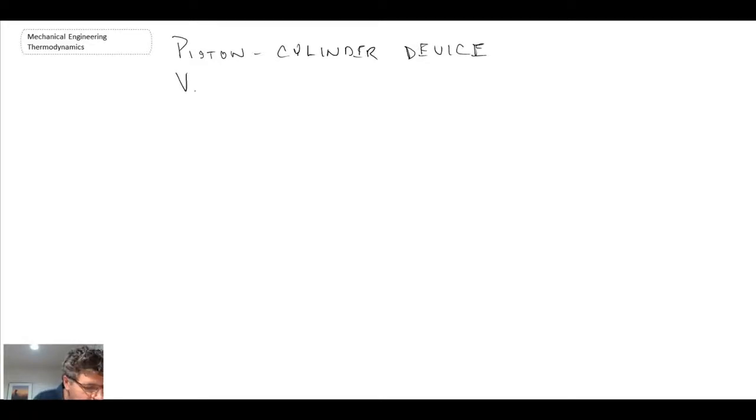We know that the volume of the liquid is 0.1 meters cubed, and the volume of the gas phase, or the vapor phase, is 0.9 meters cubed.